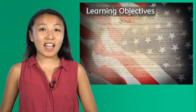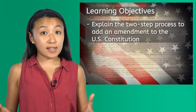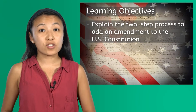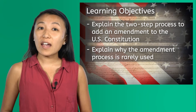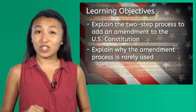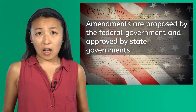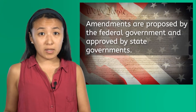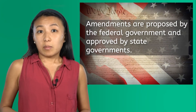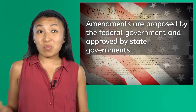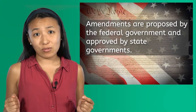The objectives today are: first, to explain the two-step process to add an amendment to the US Constitution, and then to explain why the amendment process is rarely used. The process sounds simple — amendments are proposed by the federal government and approved or ratified by state governments — but actually getting one through those steps is much harder than it sounds.